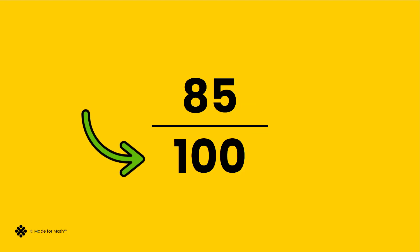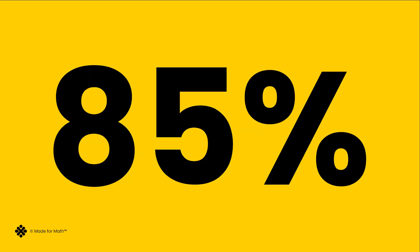The denominator is the number in the bottom of the ratio. It tells us the name of the parts. In a percent, the denominator never changes. It can be written as a ratio or a fraction like this, but also like this. The symbol at the end tells us that we have 85 out of 100 parts.